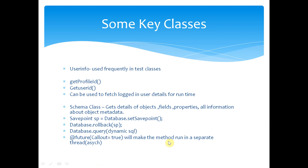Similarly, another important one — these are the important methods you can use to manipulate from UserInfo. Now, if you also want to get schema details, there is a Schema class which is useful. You can get the details of an object's field properties and all the information about the object metadata.